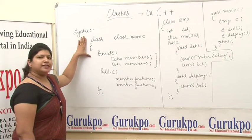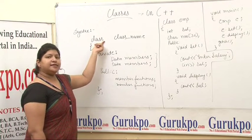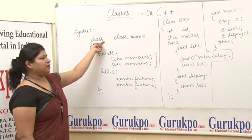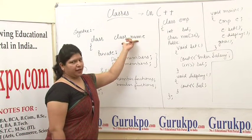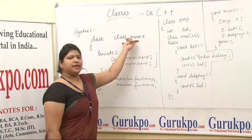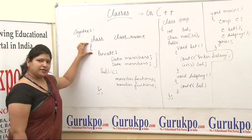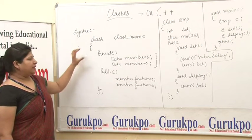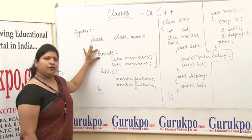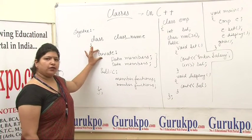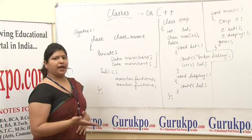First we will discuss the syntax. The word 'class' is a keyword — a reserved word in C++. After the keyword comes the class name, which is given by the user, such as 'student' or 'employee'. Then we start the curly braces. The first scope shown is 'private', which defines where and how you can access a variable.